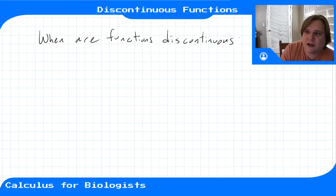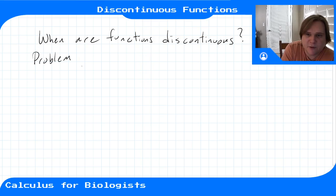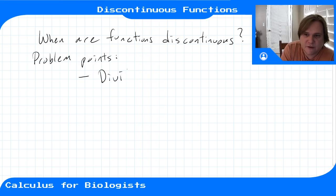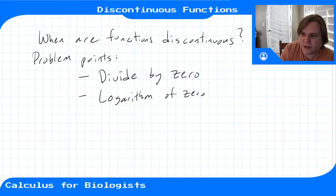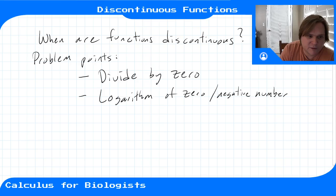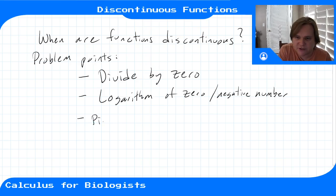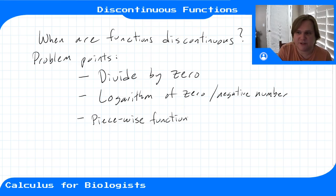Functions are discontinuous when we run into problem points. Any problem point would be a point where we either divide by zero, try to take a logarithm of zero or a negative number, or maybe where we have a piecewise function where these pieces are pieced together.